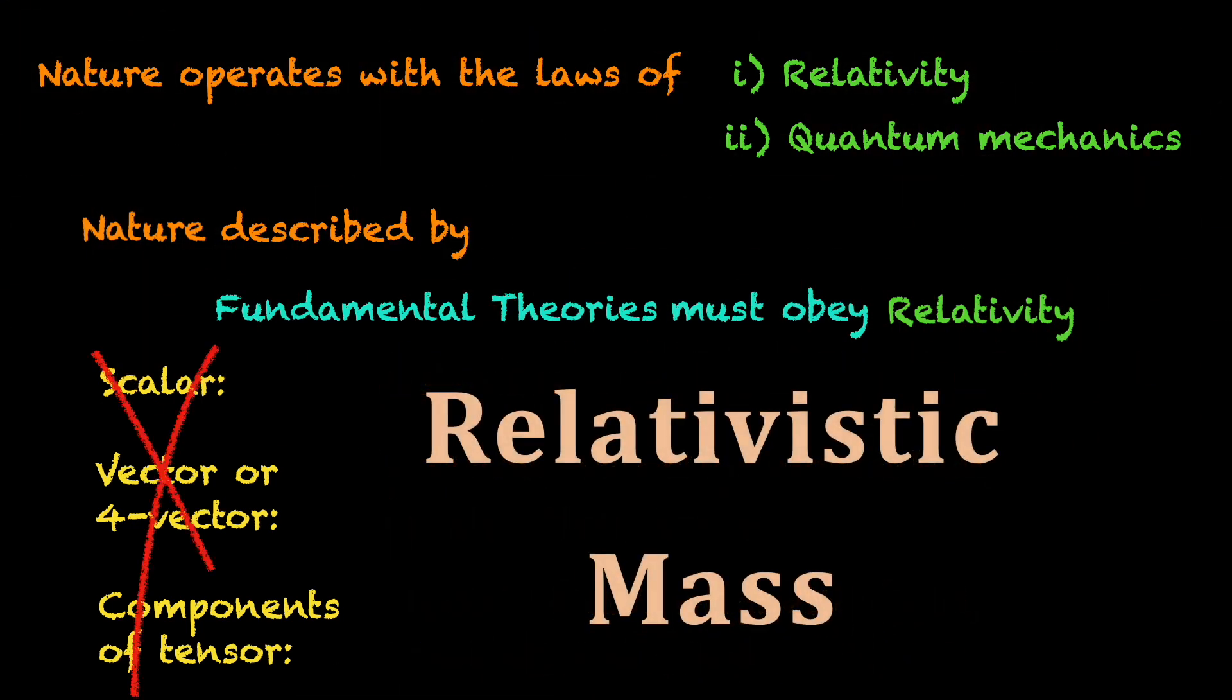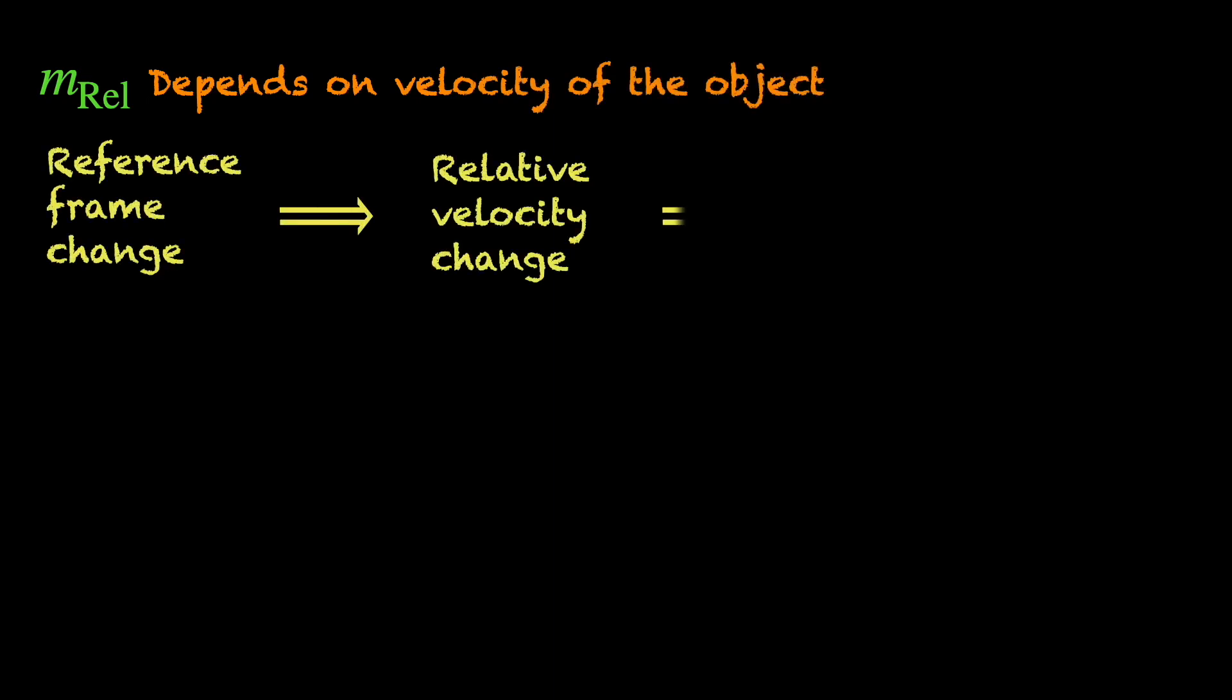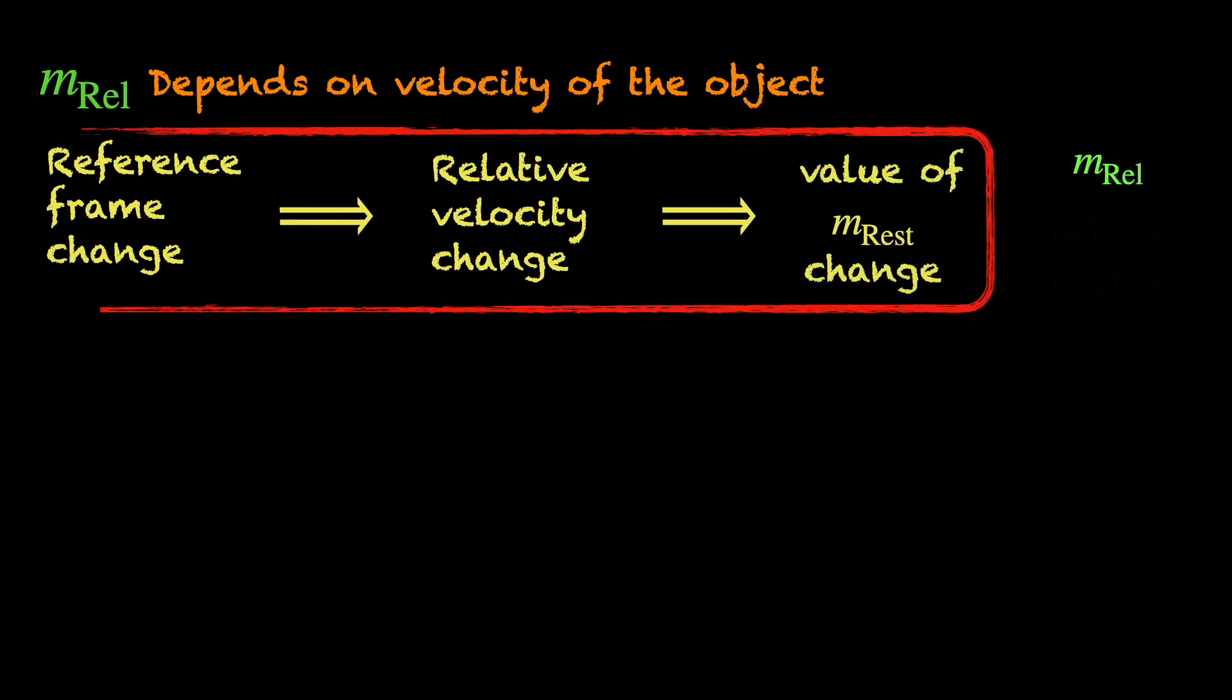The relativistic mass is neither of these. It is velocity-dependent. So, if you go to a different inertial frame, the relative velocity changes changing its value, thus clearly not a scalar.